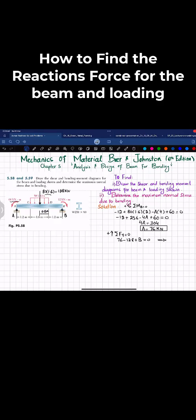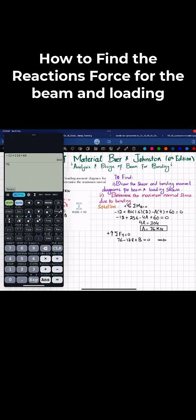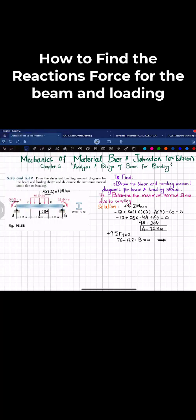From here, 76 minus 128 gives you minus 52, so B equals plus 52 kilonewtons. Now we have these two values.